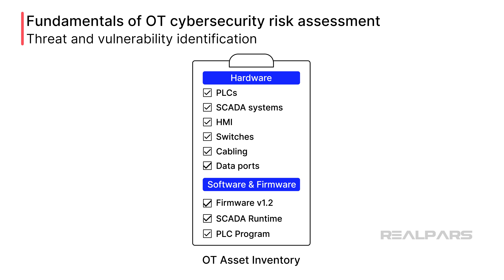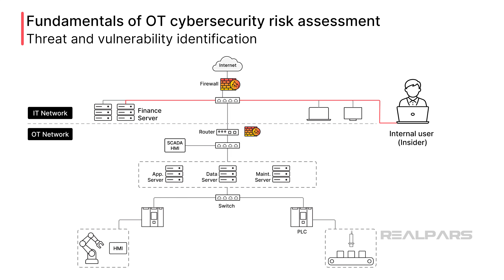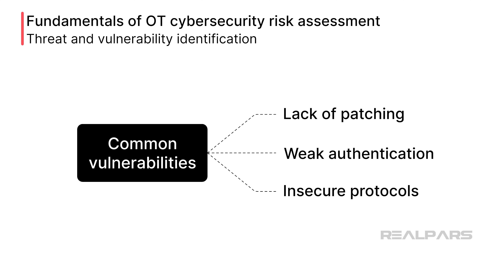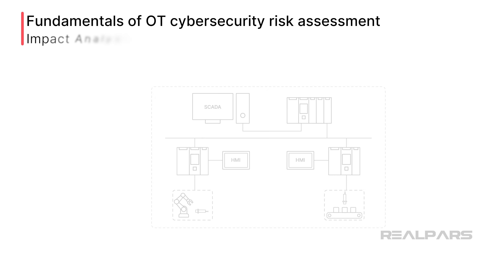Once we have all of our assets listed, we know all of the items that might be attacked. Next, we need to identify the types of threats our systems may invite. These threats can be internal, from insiders such as skimming funds from accounts or inadvertent misconfigurations of network switches that allow bypassing of user authentication requirements. Threats can also be external, from internet sources, malware, hackers, or nation-state actors after valuable assets such as formulations and recipes. Often forgotten are common vulnerabilities with legacy OT hardware and software, such as the lack of patching, weak authentication, and insecure protocols.